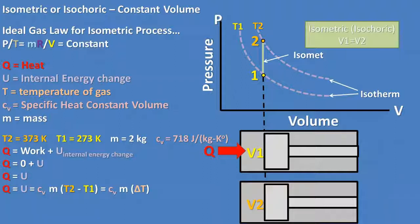Recall from previous videos that the total energy required to increase or decrease a substance temperature is equal to the specific heat of the substance, in this case the specific heat for a constant air volume process, multiplied times the mass of the substance, multiplied times the change in temperature.